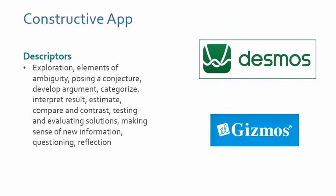Constructive apps involve the construction of one's knowledge and understanding. Associated activities include exploration, elements of ambiguity, posing a conjecture or problem, developing an argument, categorizing information, interpreting results, estimating, comparing and contrasting, testing and evaluating solutions, making sense of new information, questioning, and reflecting. One app doesn't necessarily include all these activities. Desmos and Gizmos are two examples of constructive apps.